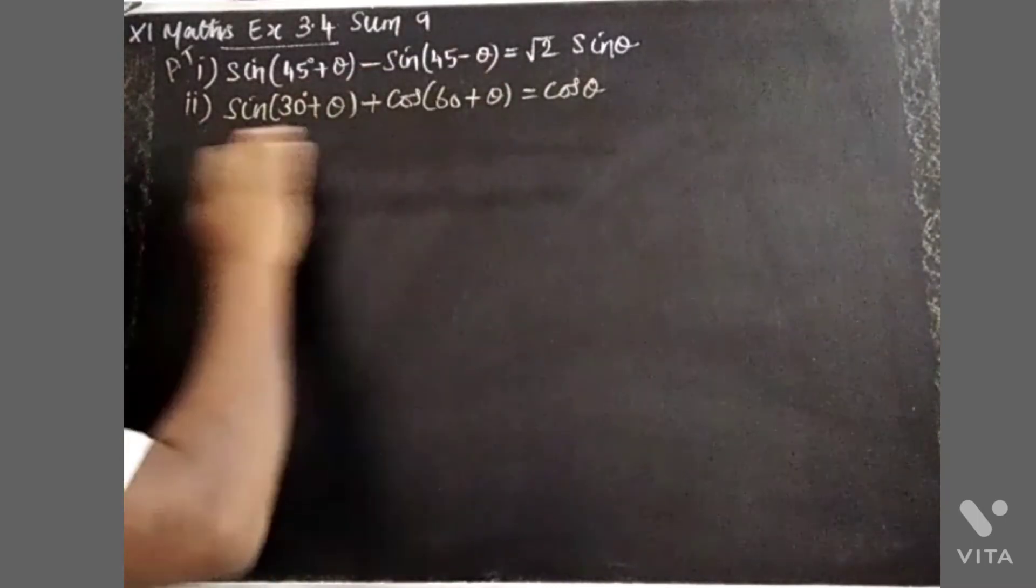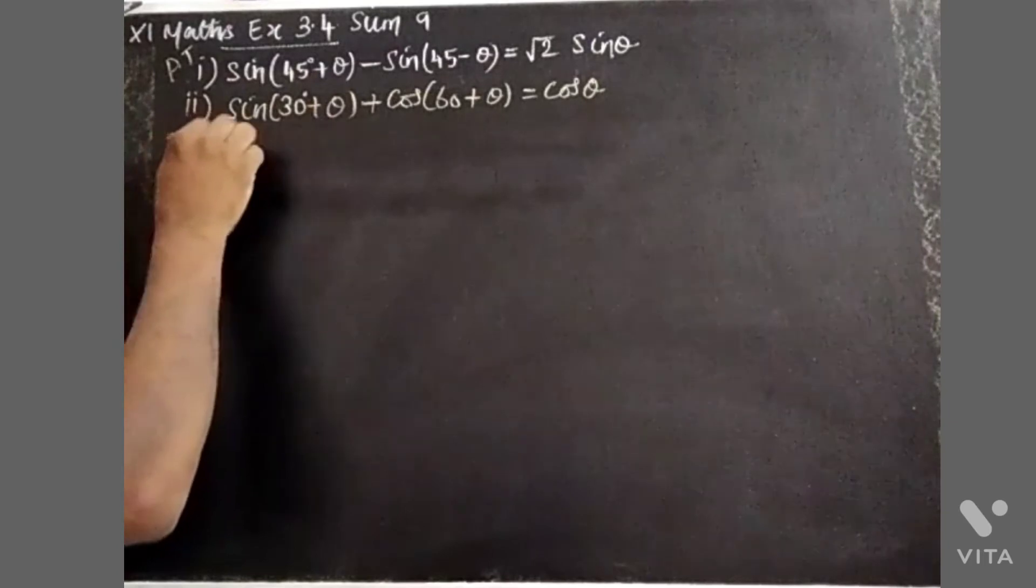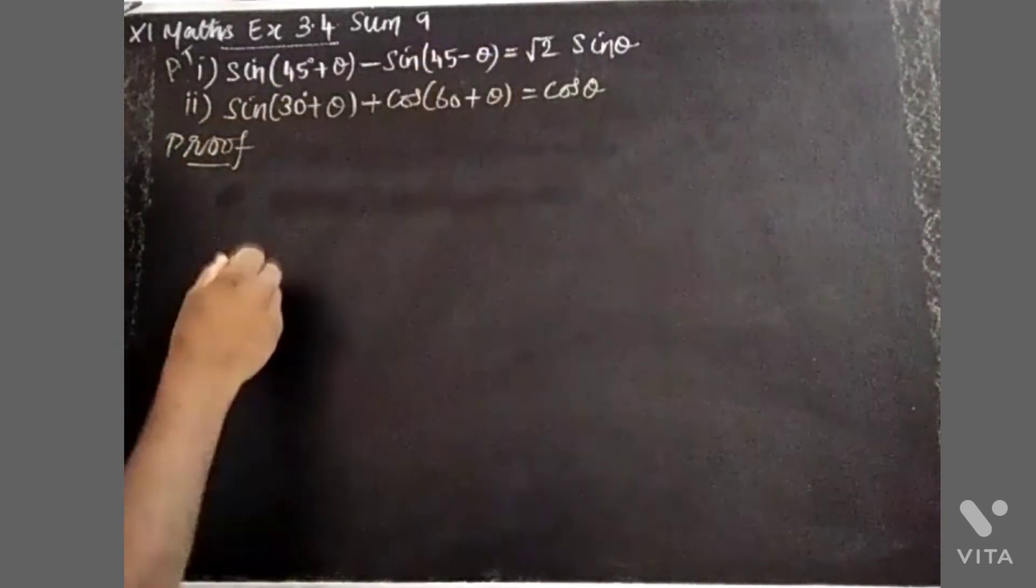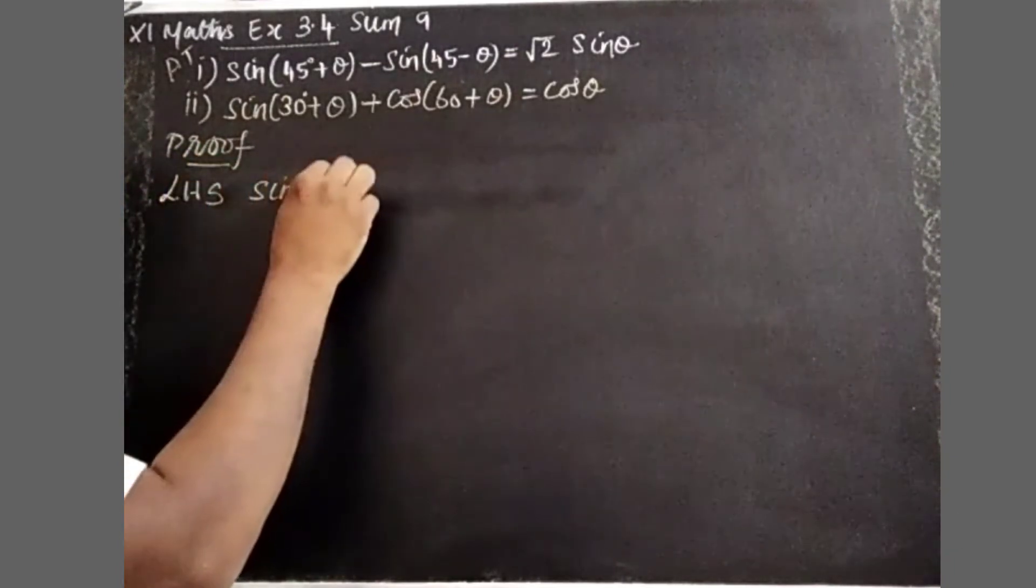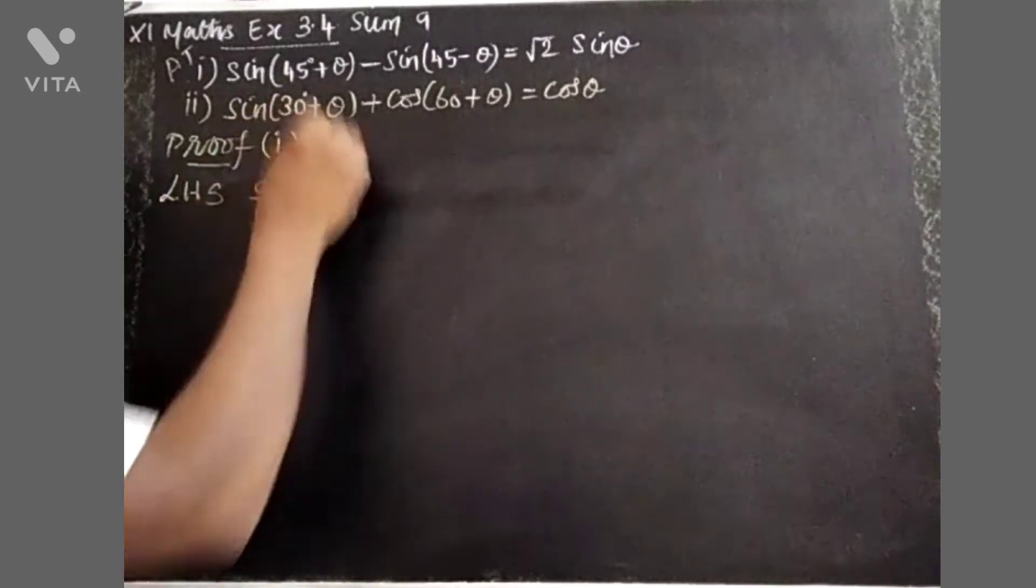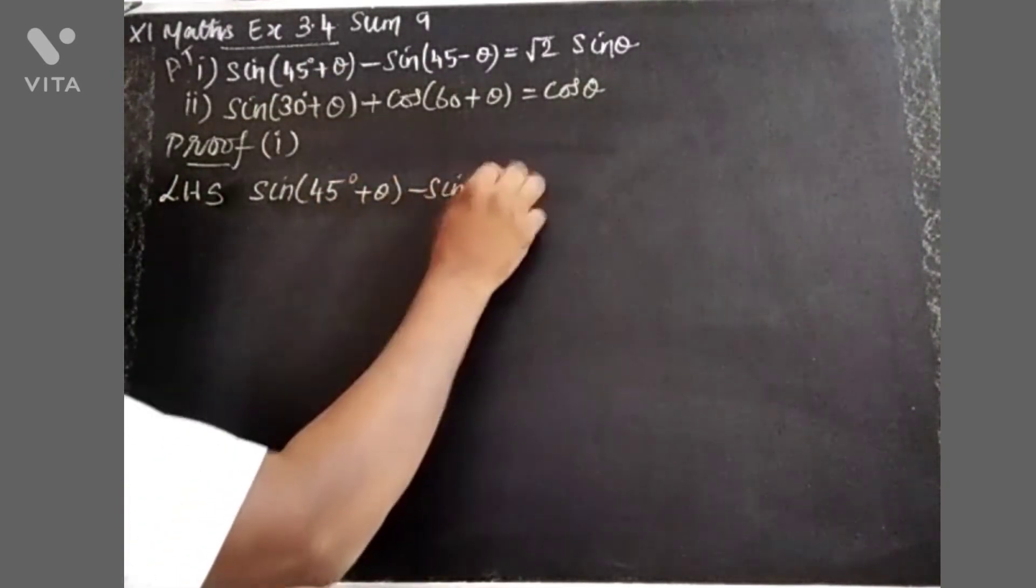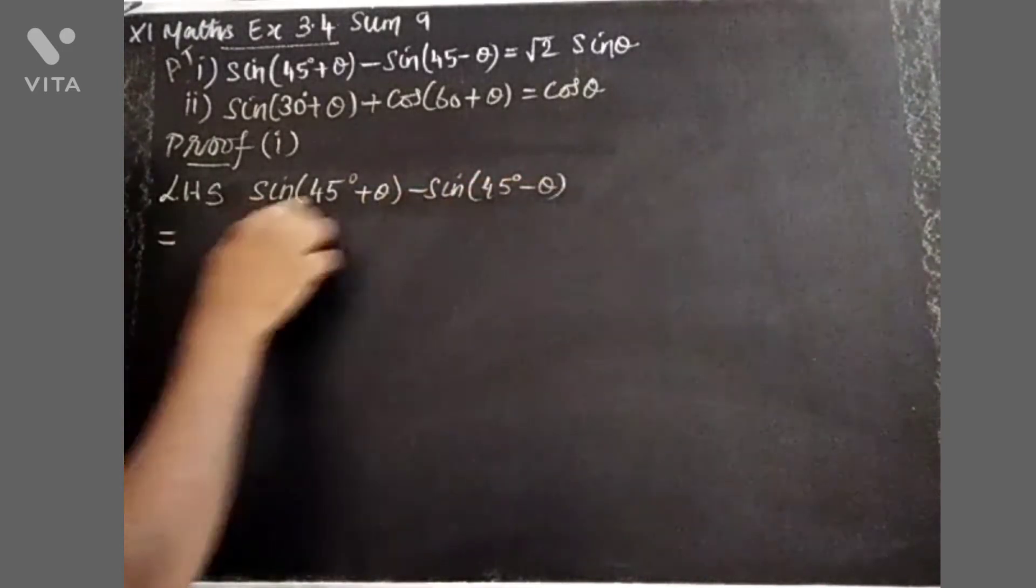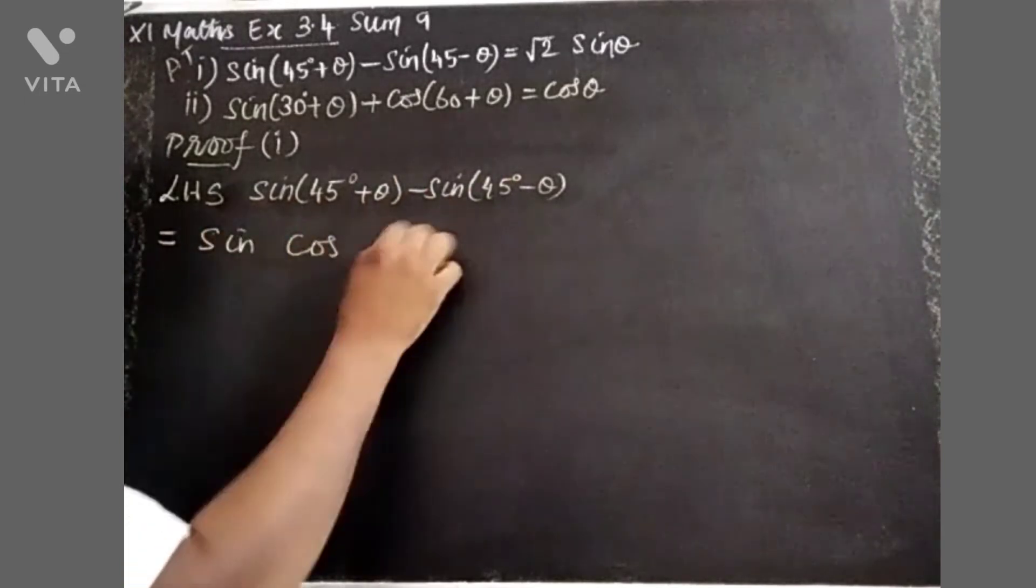We'll prove this step by step. The left-hand side has sin(45+θ) minus sin(45-θ). For this, we'll use the formula for sin(A±B), which is sin A cos B ± cos A sin B. This is the formula: sin cos cos sin.